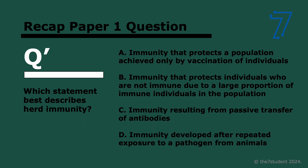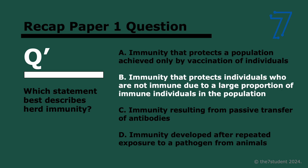Which statement best describes herd immunity? It's an immunity that protects individuals who are not immune due to a large proportion of immune individuals in the population. Remember, this doesn't have to be 100% — it just has to be a number large enough, and that depends on the virus and also the population.